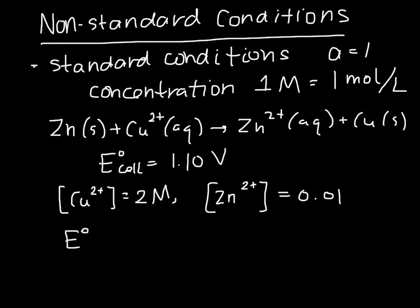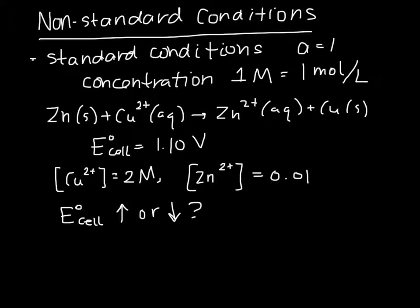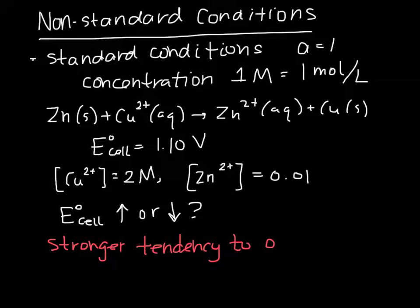We want to know, does the cell potential go up or down? If we use Le Chatelier's principle, which talks about how much we have on either side of the reaction, we would see that the reaction will have an even stronger tendency to occur, and so the cell potential would be greater. For this particular example, this would have a stronger tendency to occur, which means that E_cell should be greater than the standard cell potential.